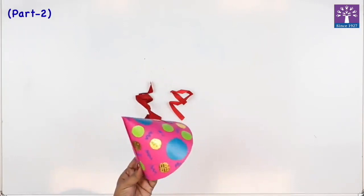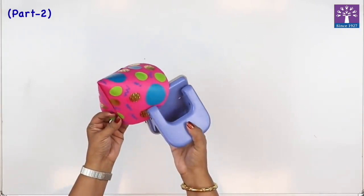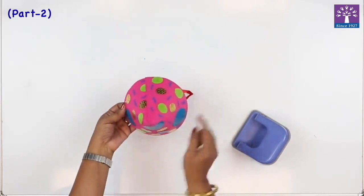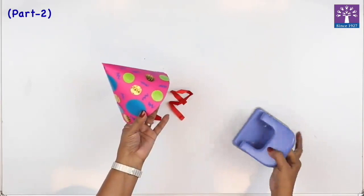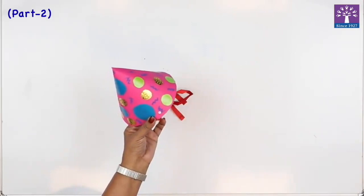You can use this punch machine to make a hole, one on this side and one exactly on the opposite side here. You can take a teacher's help to make this.